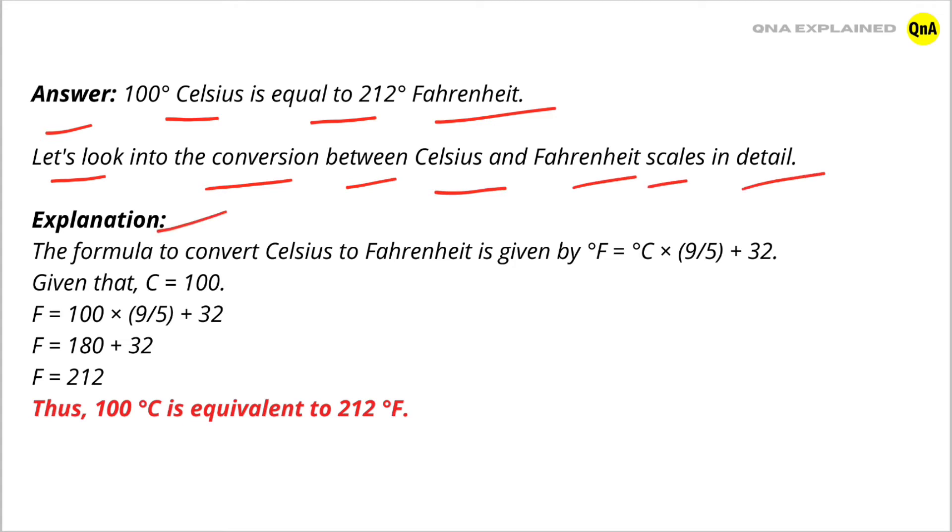Explanation: The formula to convert Celsius to Fahrenheit is given by °F = °C × (9/5) + 32. Given that C = 100, F = 100 × (9/5) + 32, which is equal to 180 + 32.